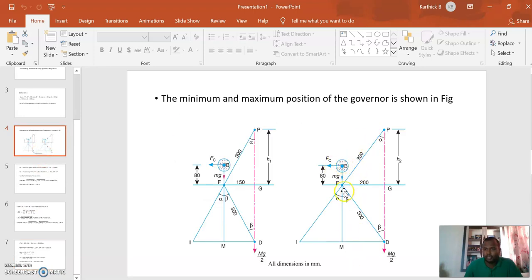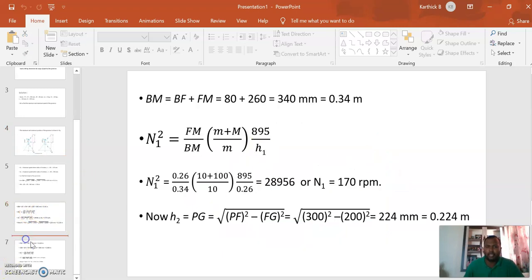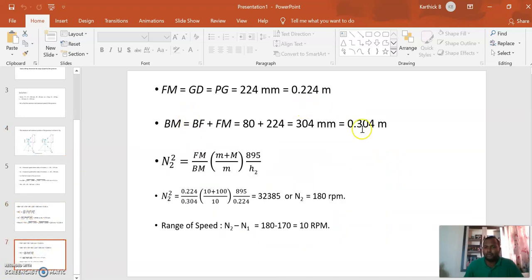BM we have to find: BF plus FM. BF is 80 mm, FM is 0.224. By calculating we get BM equals 0.304 meters.